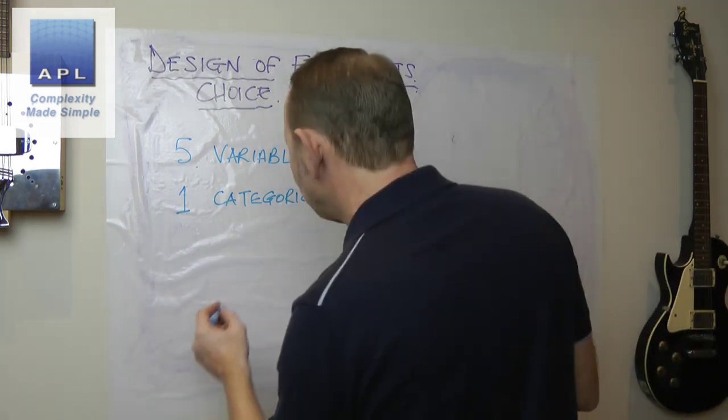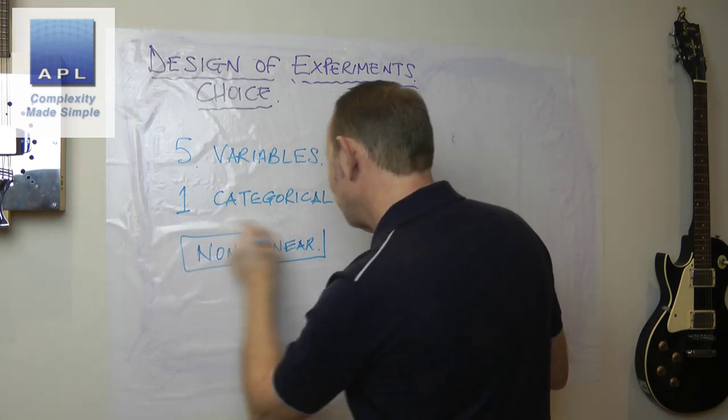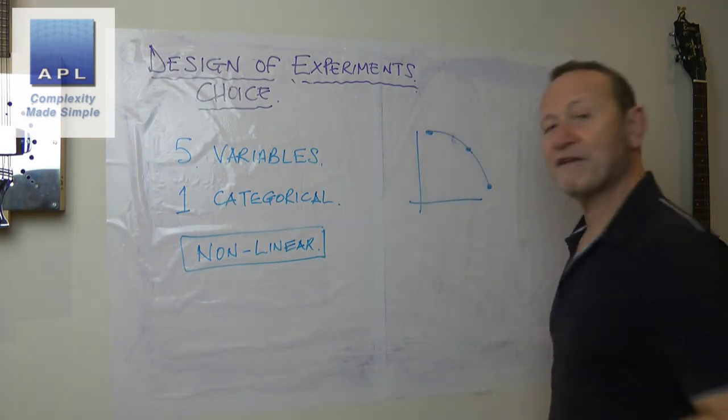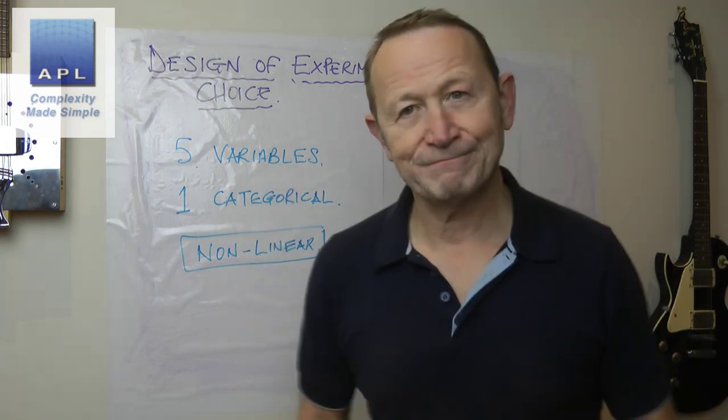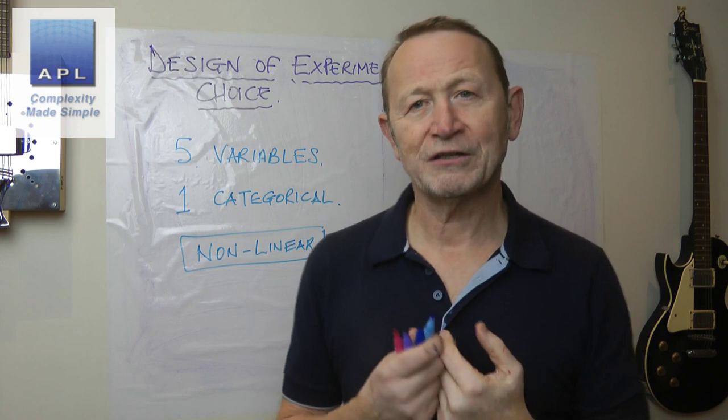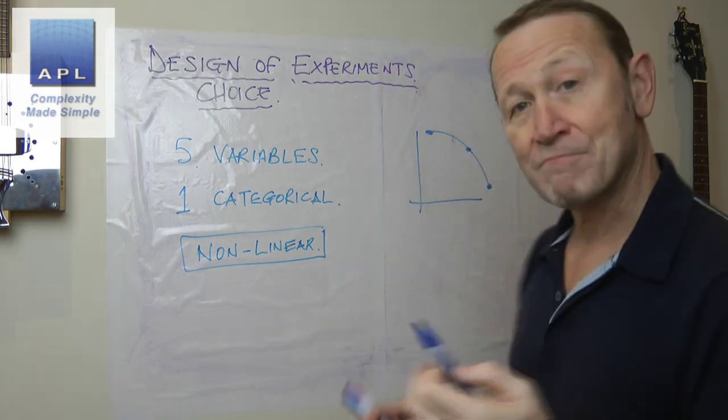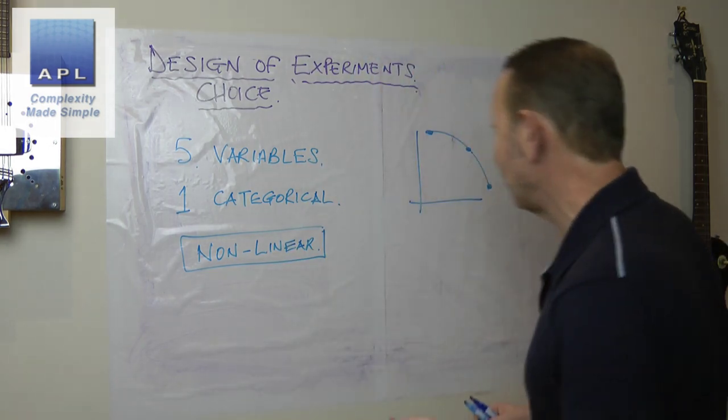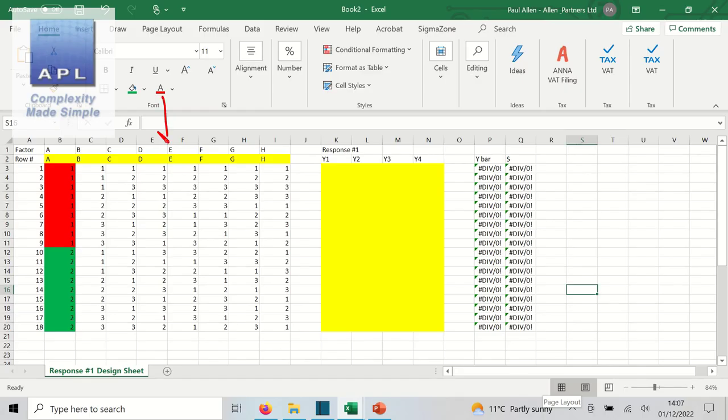So that was the first part of the challenge. The second part of the challenge, though, was the output is definitely not linear. In other words, we have some kind of curve that we have to deal with. So that's the question: which DOE would you use? And what I said to him was, well, my particular choice in this situation would be the Taguchi L18.